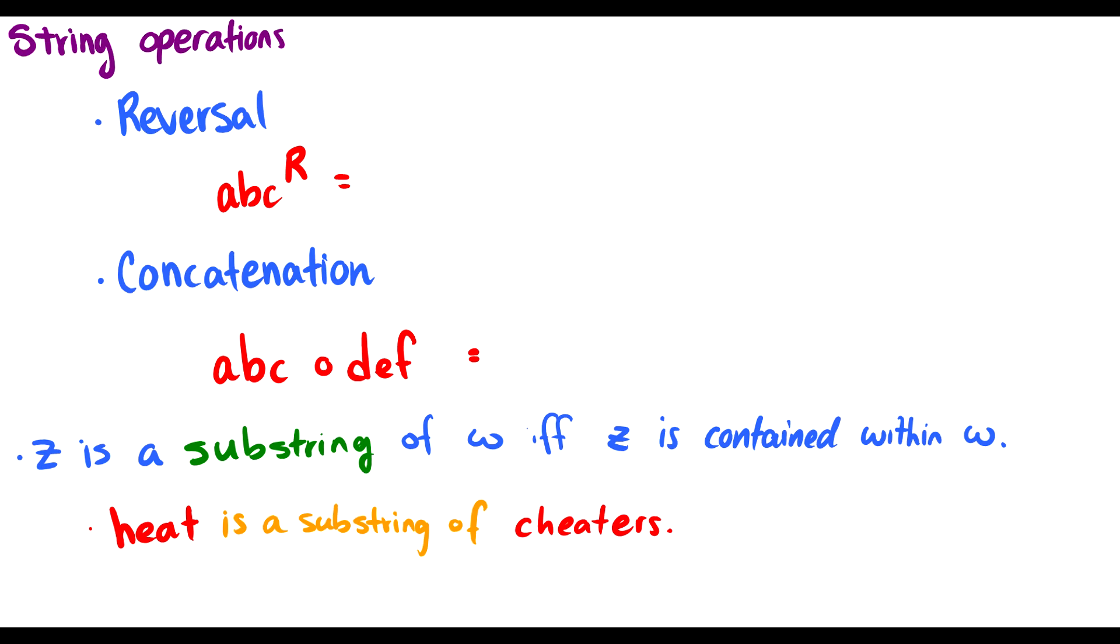Now, there are things we can do to strings. One is we can reverse them. This is done with this capital R at the end of a string. The reverse means that instead of starting at the beginning and going to the end, we start at the end and go to the beginning. So ABC reversed is just CBA.